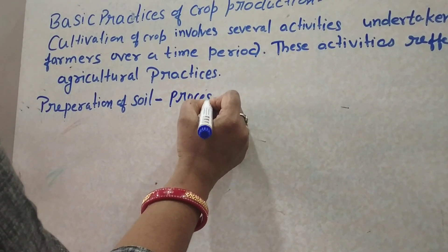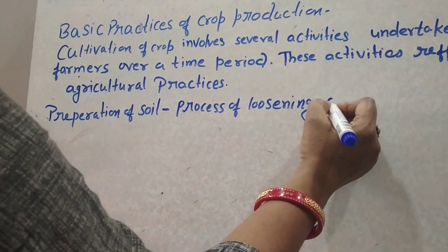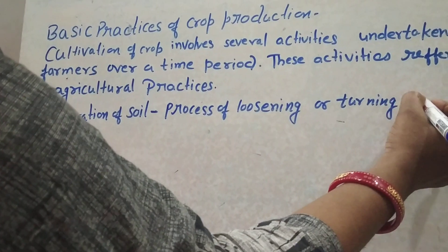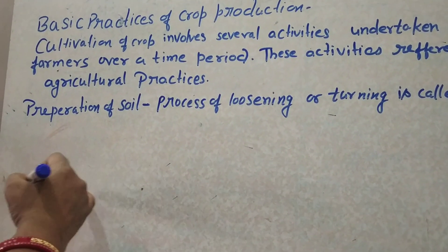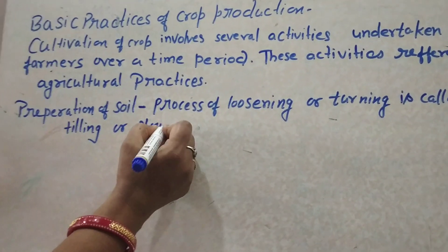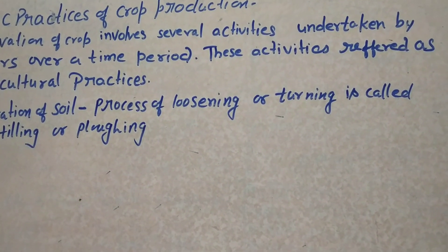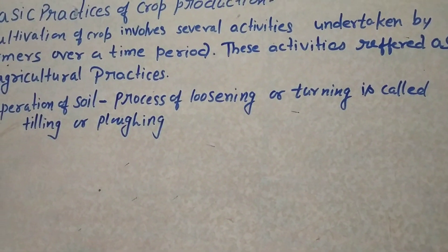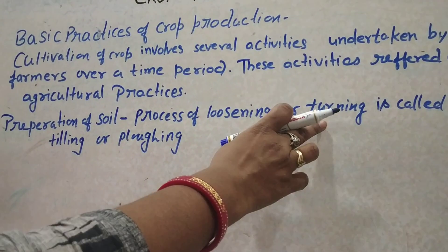Preparation of soil is the process of loosening and turning the soil. This is also known as tilling and plowing. We can complete this by loosening or turning the soil.